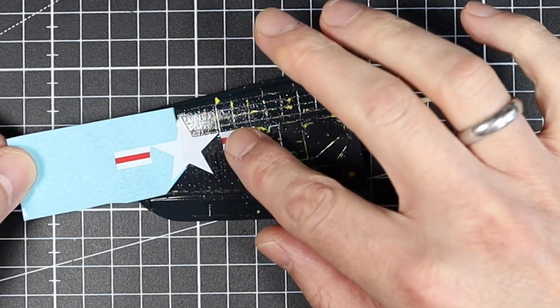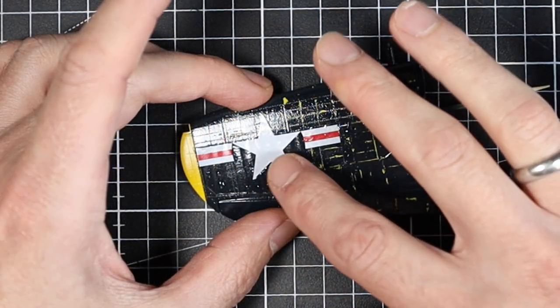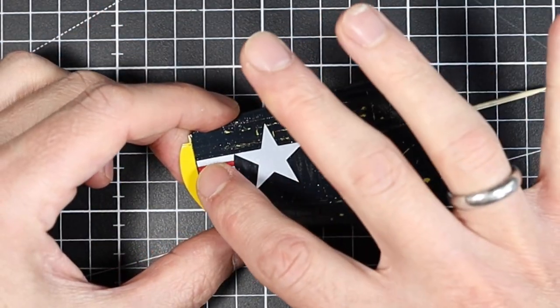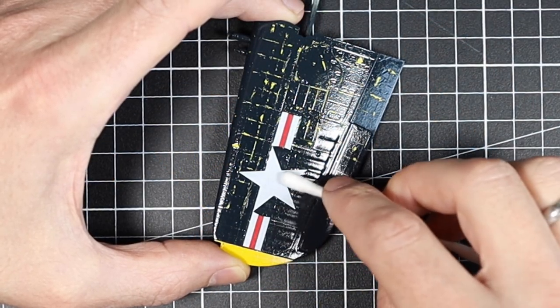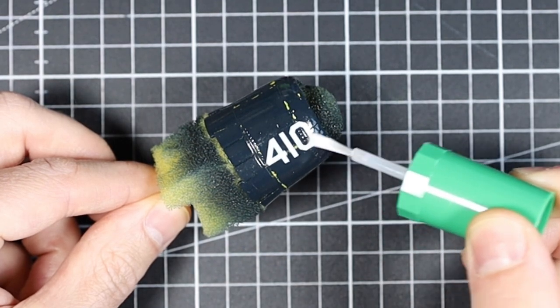If you don't like applying decals then Hobby Boss is perfect for you. The decal sheet is limited to the most necessary. The decals are thin and easy to apply, but the color coverage isn't the best.